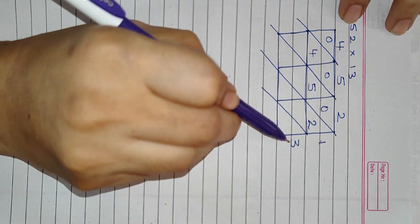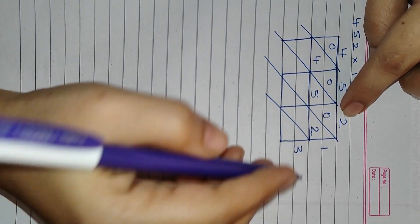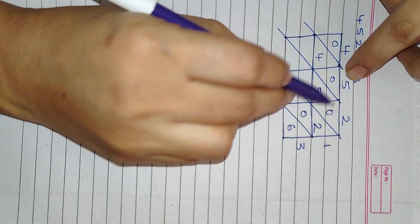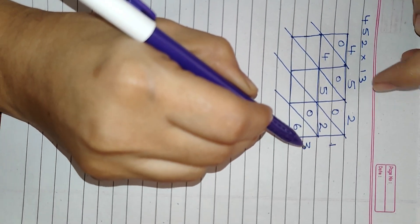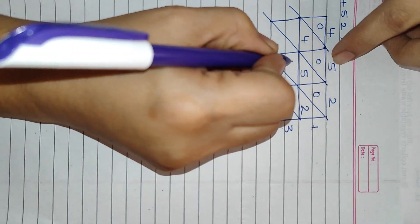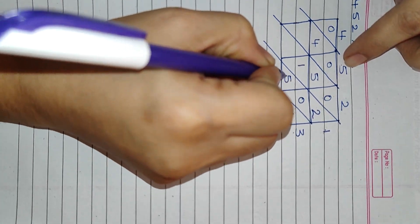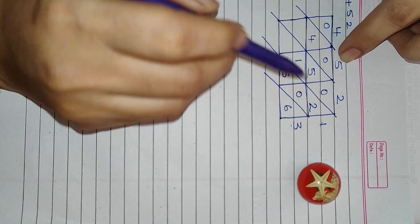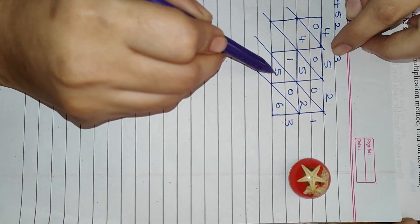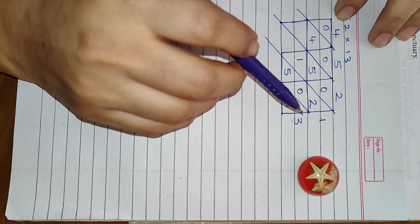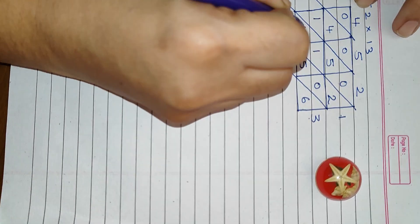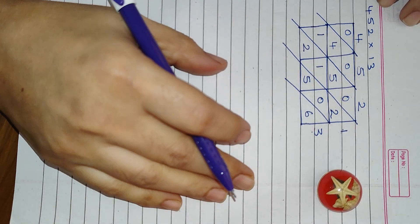Now we are going to shift to the next. 3 into 2 is 6. 0 comes up. 5 times 3 is 15. So 1 and 5. Remember, if this is 2-digit, you should put the 1 up, the tens place should go up, ones place should go down. 4 times 3 is 12. Very good. So 1 will go up, 2 will come here.